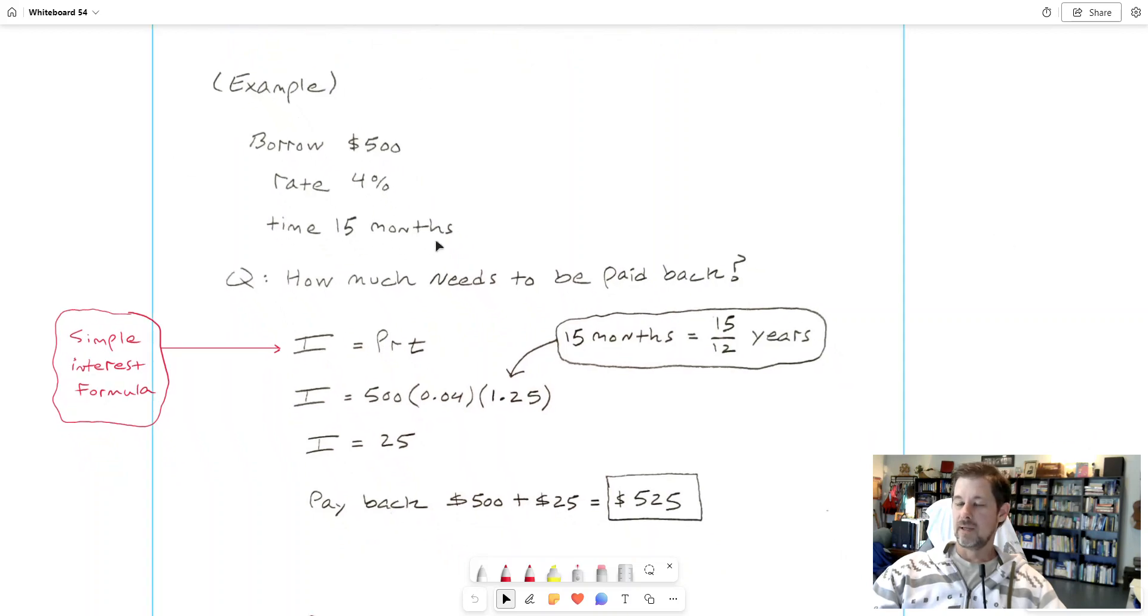So I want to start off with an example that's kind of like the ones that we would have seen in the simple interest video that I've already made. Let's say we borrow or loan $500, the interest rate 4%, and the time is for 15 months.